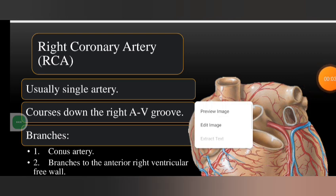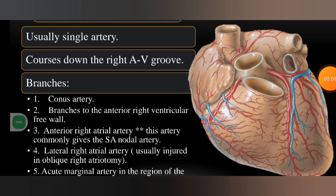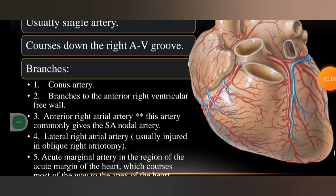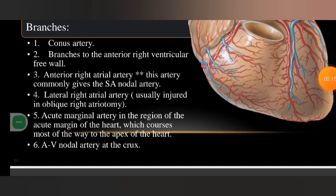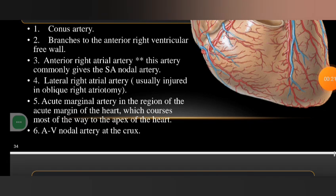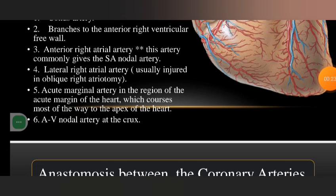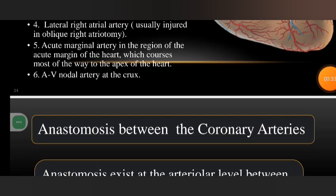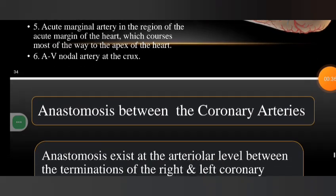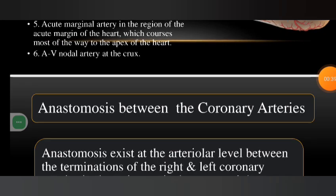The right coronary artery is usually a single artery that courses down the right AV groove. Its branches include the conus artery, anterior right ventricular free wall artery, anterior right atrial artery — which commonly gives off the SA nodal artery — the lateral right atrial artery, which may be injured in oblique right atriotomy, the acute marginal artery coursing most of the way to the apex, and the AV nodal artery.